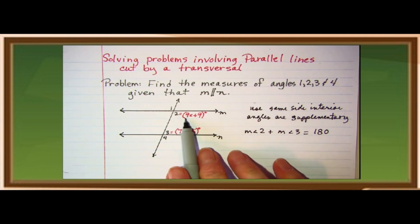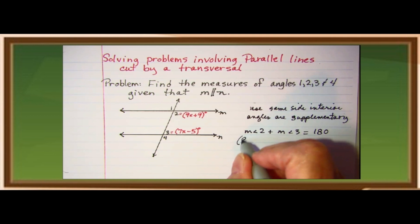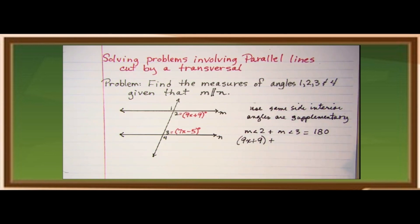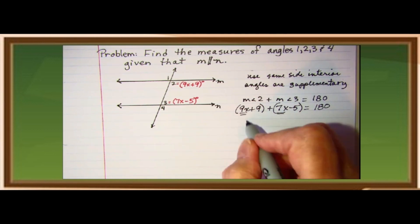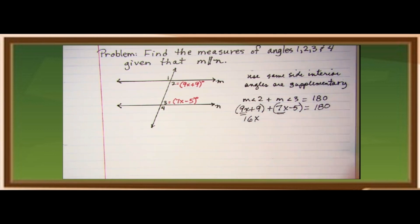And the given in angle two is 9x plus 9. So, let's put it in there. And angle three, given us 7x minus 5, and those two angles added together gives you 180 degrees. Now, combining 9x and 7x, that is 16x.